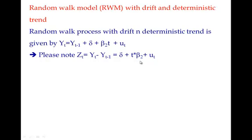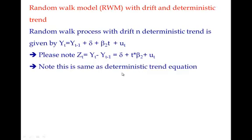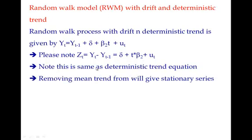A deterministic trend can be made stationary the moment you take the mean, which is δ + tβ₂ in this case, and reduce that mean value from each value of Zt. If you remove the mean of the trend, that is δ + tβ₂, from Zt, what you will get is ut.